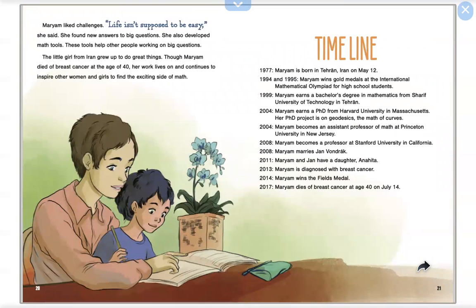Maryam liked challenges. Life isn't supposed to be easy, she said. She found new answers to big questions. She also developed math tools. These tools help other people working on big questions. The little girl from Iran grew up to do great things. Though Maryam died of breast cancer at the age of 40, her work lives on and continues to inspire other women and girls to find the exciting side of math.